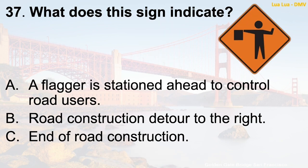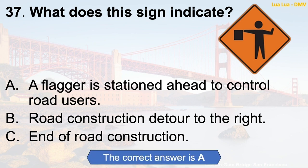Question 37: What does this sign indicate? A. A flagger is stationed ahead to control road users. B. Road construction detour to the right. C. End of road construction. The correct answer is A: A flagger is stationed ahead to control road users.